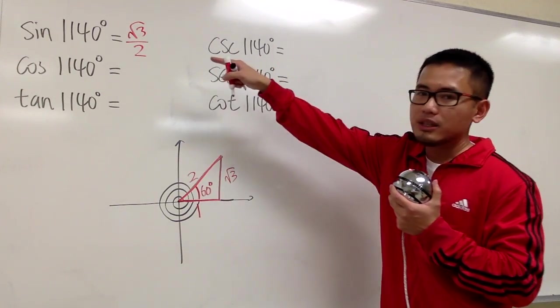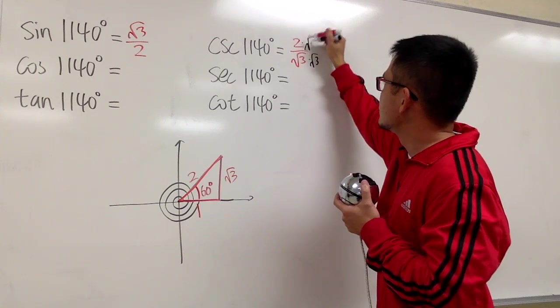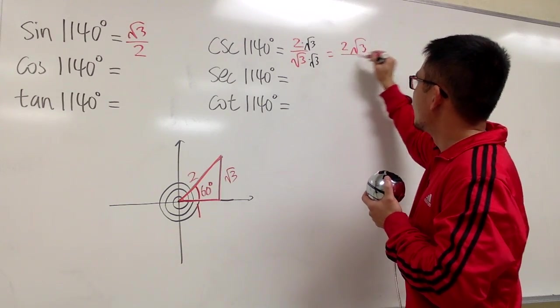And for the cosecant, it's just going to be 2 over square root of 3. And then you just go ahead, do this. So, you get 2 square root of 3 over 3.